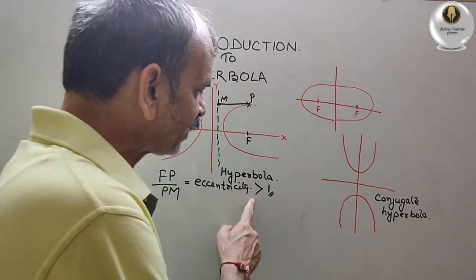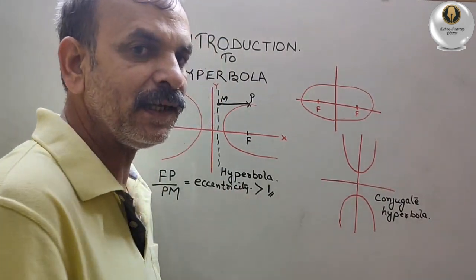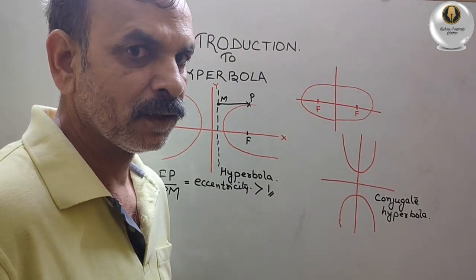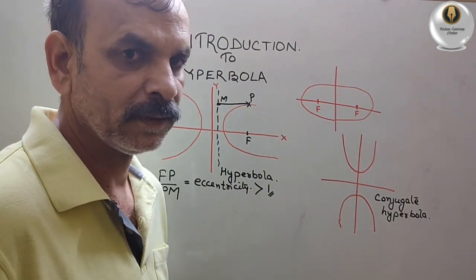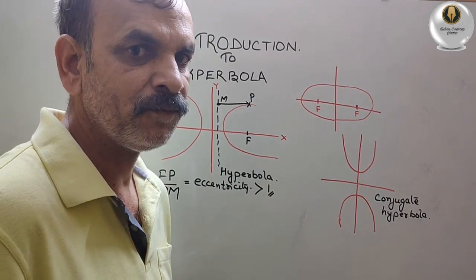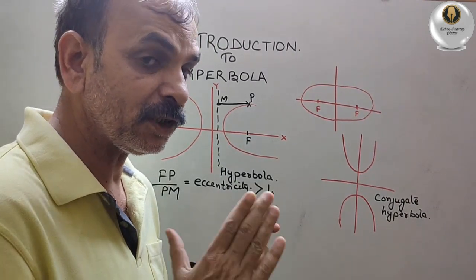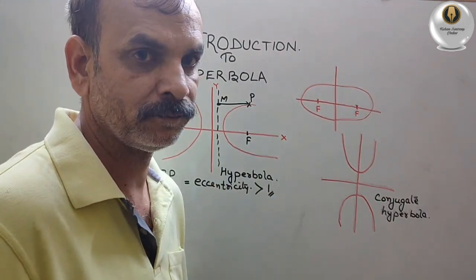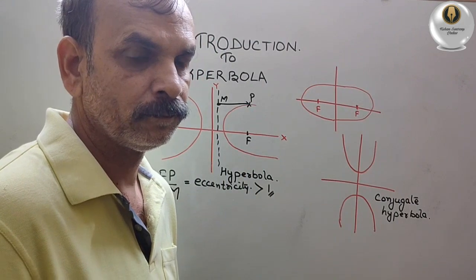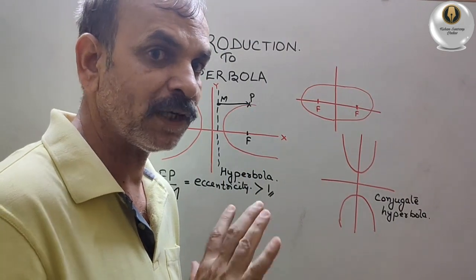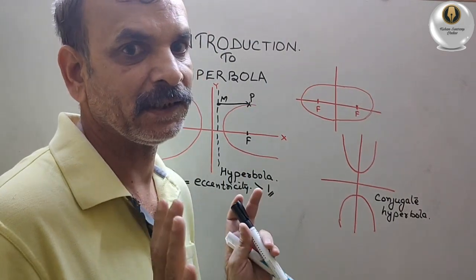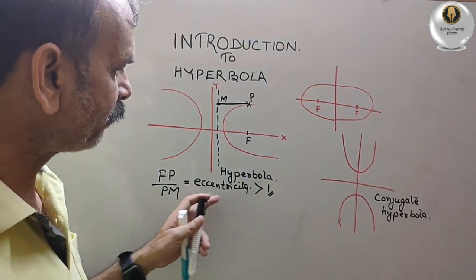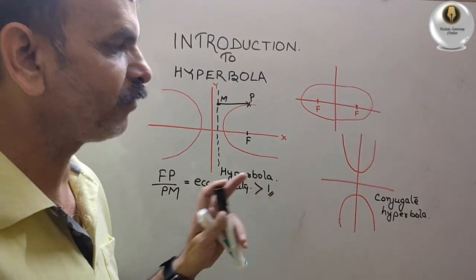If eccentricity is less than one, it is an ellipse. If it is equal to one, it is a parabola. We have to understand that thing — so for hyperbola it will come as greater than one.